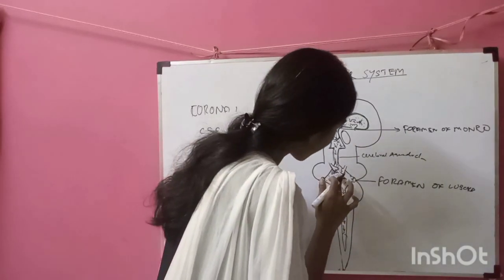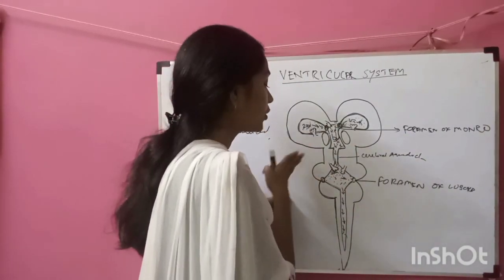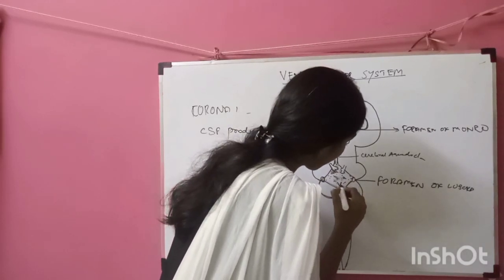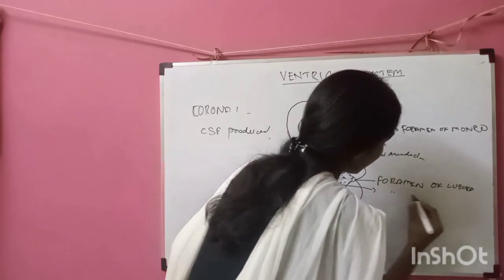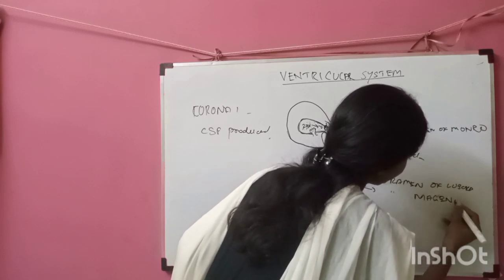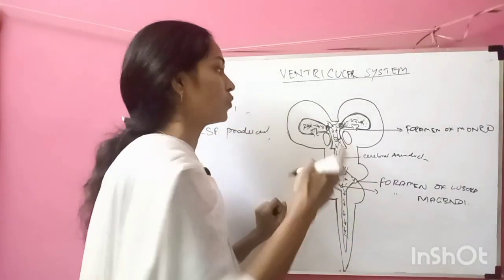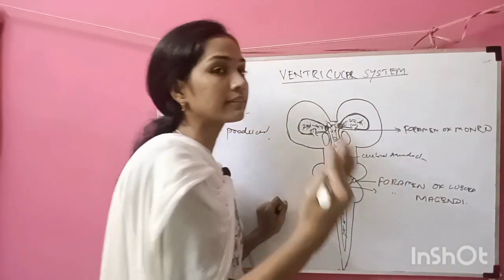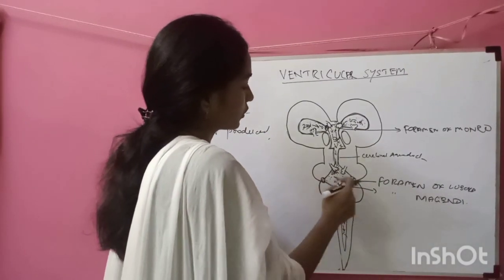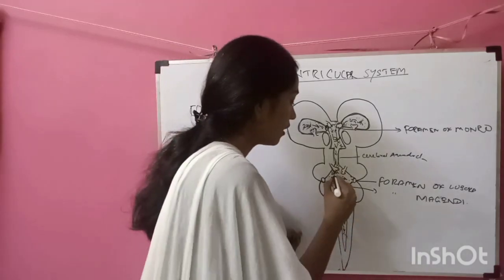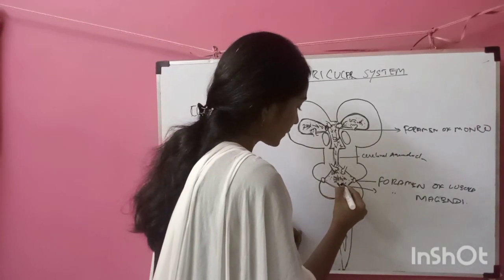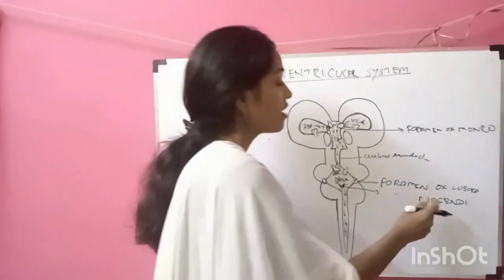Then there is a foramen present posteriorly, which is called the Foramen of Magendie. So there are three important foramina: one is the Foramen of Monroe from the lateral ventricles into the third ventricle, two are the lateral foramina of the fourth ventricle called the Foramen of Luschka, and one posterior foramen of the fourth ventricle called the Foramen of Magendie.